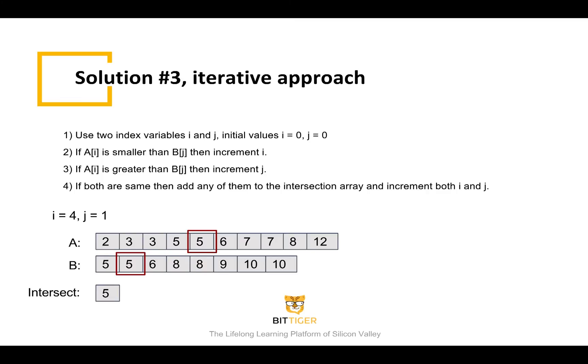Now i is equal to four, and j is equal to one. A of four is equal to five, and B of one is equal to six. Since five is equal to five, should five be another intersection element? Not really, because duplicate elements are not allowed in the intersection array. We need to exclude it. We then increment j to two.